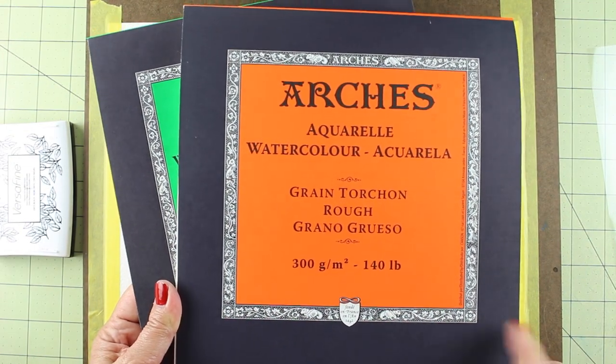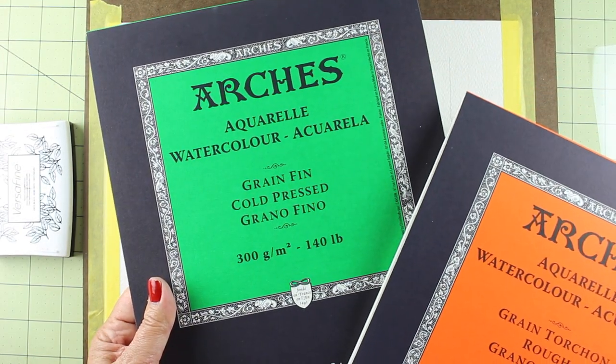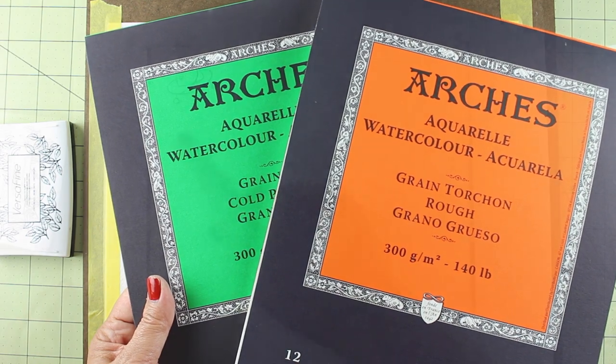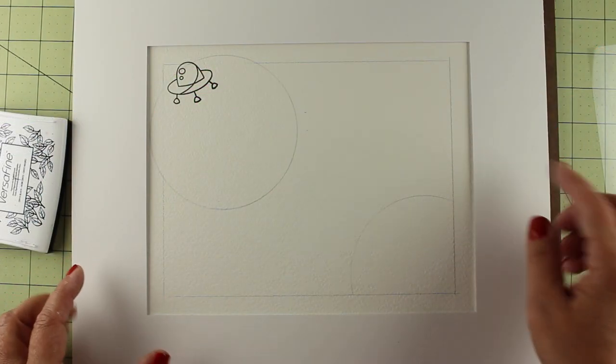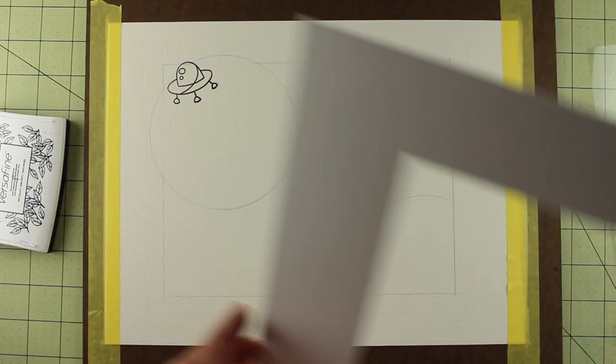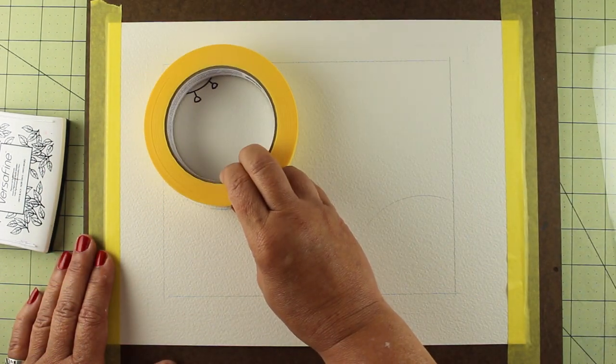I'm going to use some Arches watercolor paper. I'm using the rough grain because that's the one I like. Most people like the regular cold press. I made my line inside the mat that I'm going to have, so I have a white outline around it.